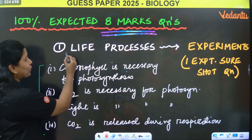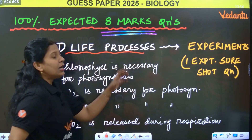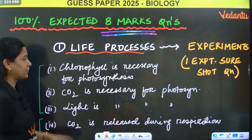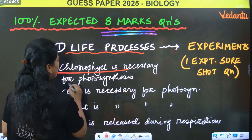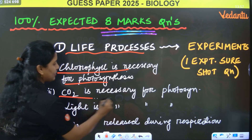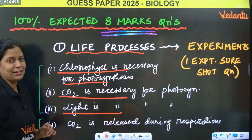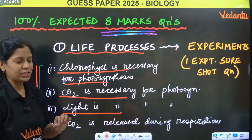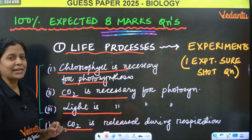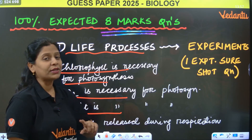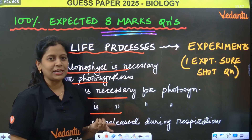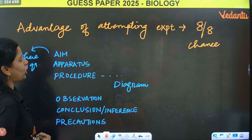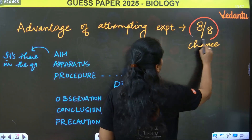In the first chapter on life processes, these experiments are there. Cover all the experiments — we have only four experiments. Chlorophyll is necessary for photosynthesis, carbon dioxide is necessary, light is necessary for photosynthesis — these three are from nutrition. CO2 is released during respiration — yeast experiment. Exhalation/inhalation experiment — also important. These experiment questions are very easy to get 8 by 8.